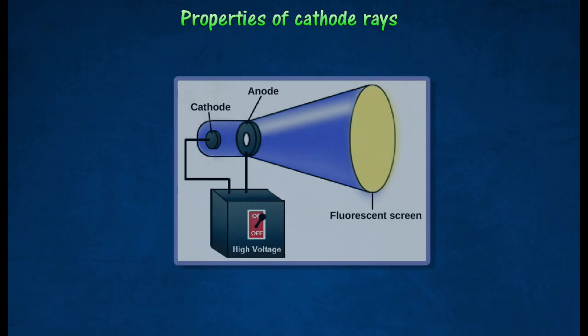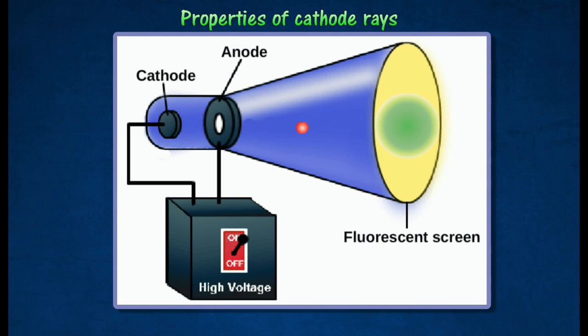Cathode rays have the following properties. Cathode rays consist of fast-moving electrons and they travel in a straight line in vacuum.